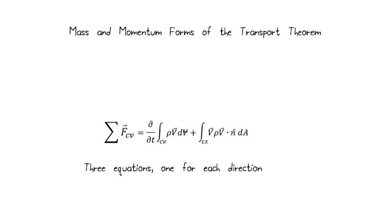Let's take a look at our mass and momentum forms of the transport theorem. Conservation of mass has the rate of change within the control volume plus the rate of mass flow across the boundary. Conservation of momentum, we need to remember, is a triple equation in the x, y, and z directions. We have the sum of forces equals the rate of change of momentum within our control volume plus the rate at which momentum enters and leaves our control volume.